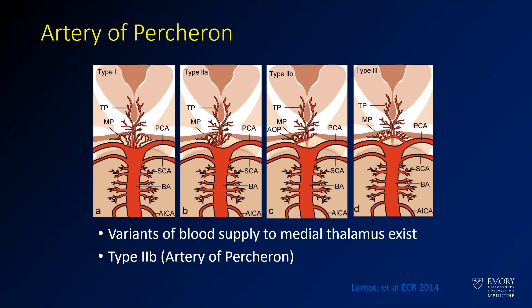This is a schematic from the journal showing different variants for the vascular distribution. The most common variant is type 1, where you have a number of perforating arteries coming off of the PCA supplying the thalamus. You can have variants where both right and left come off the same side — this is type 2A. Type 2B is the most common one referred to as the Artery of Percheron, in which one artery comes off the PCA and supplies both thalamic perforators.